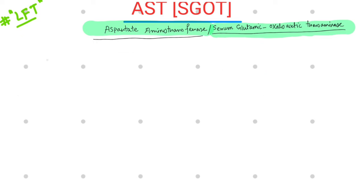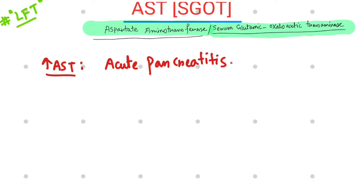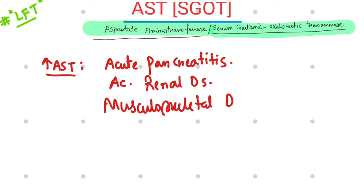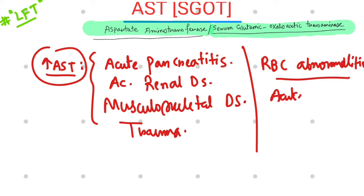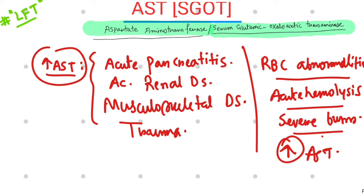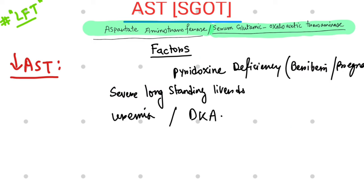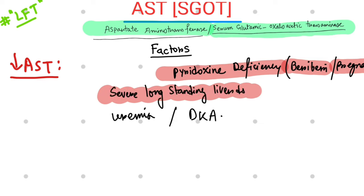There are other conditions in which AST levels might rise transiently, such as acute pancreatitis, acute renal disease, musculoskeletal disorders or trauma, hemolysis, and severe burns. Certain conditions can cause a decrease in AST levels: pyridoxine deficiency as seen in beriberi and pregnancy, severe long-standing liver disease, uremia, and diabetic ketoacidosis.